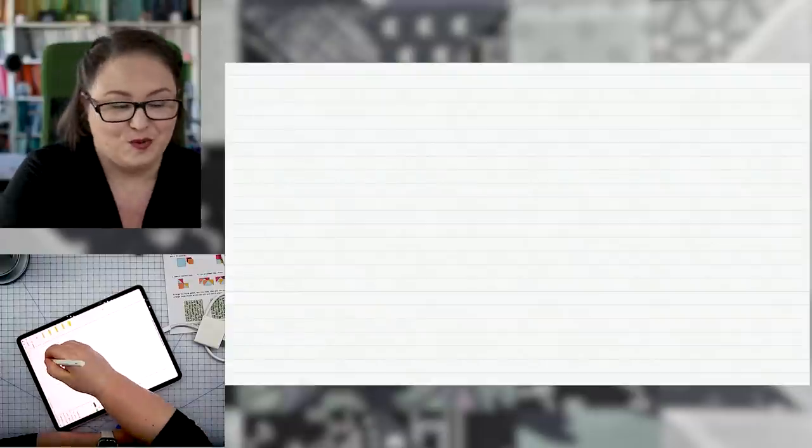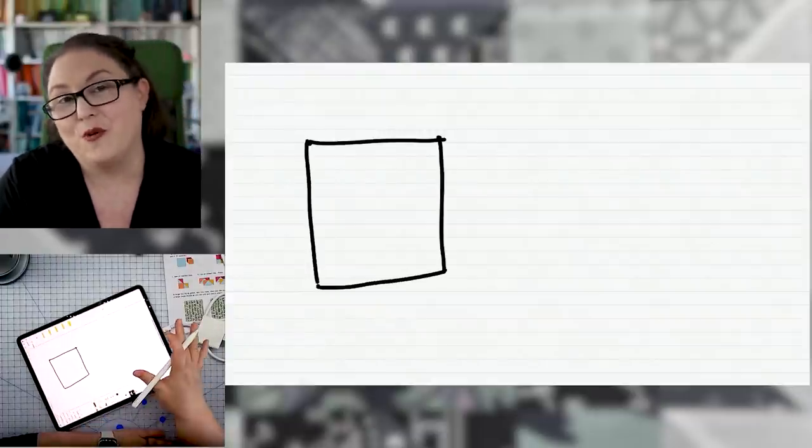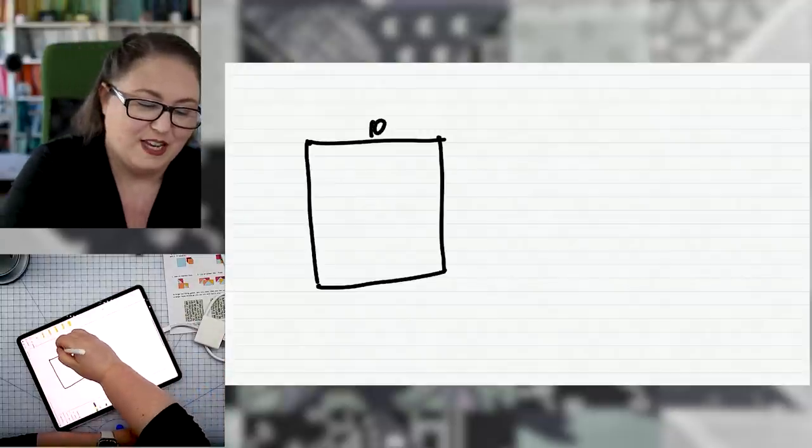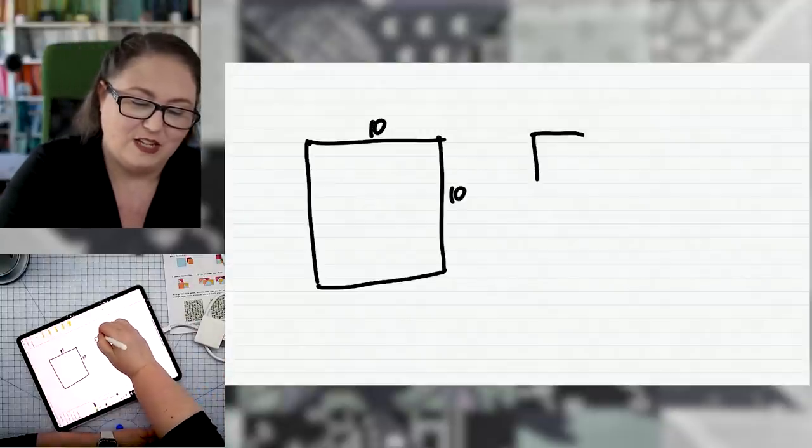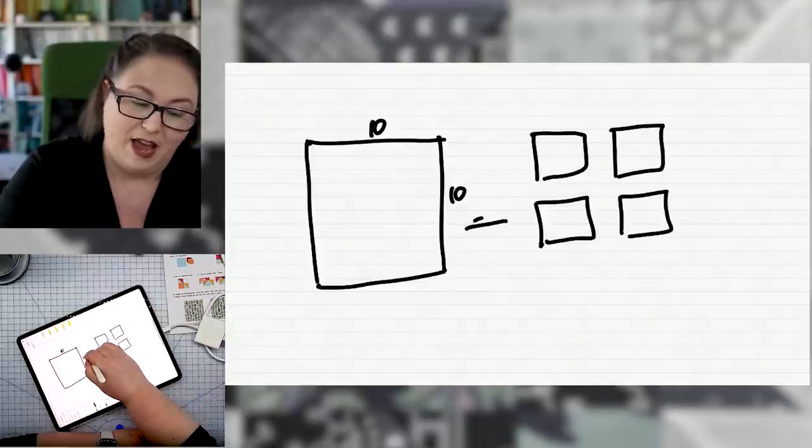Let's say you're starting with the large square instead. You have a layer cake that you want to make into four at a time flying geese to sew all together into a quilt. You have a 10 inch layer cake and you need to know the size of the four small squares that you would cut to match that.